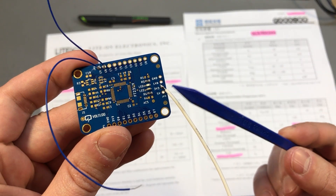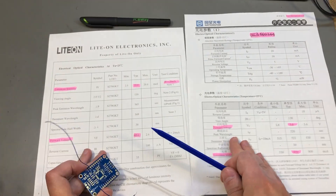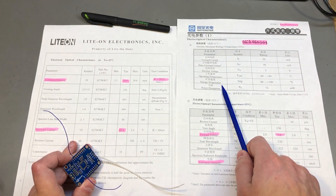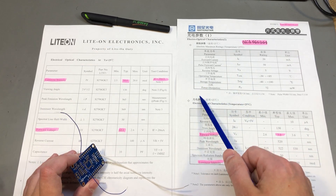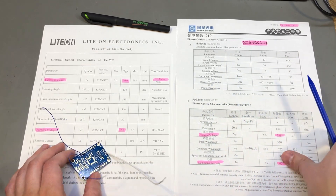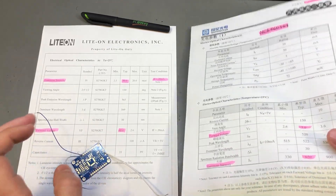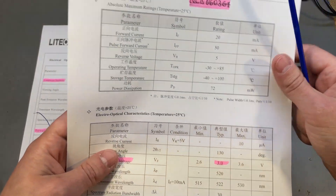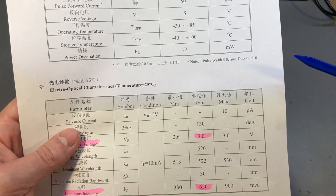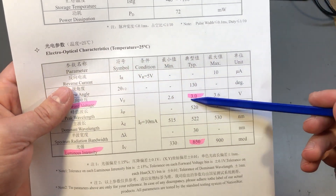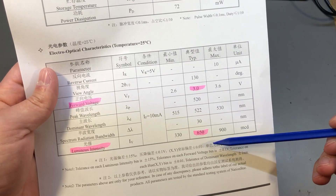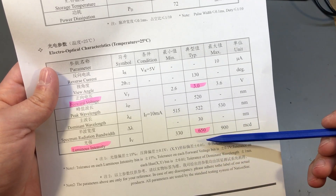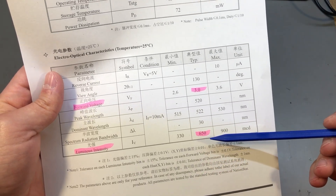Next to it, also on the same board, I have installed another LED — also green, 0603 package — but this one has a forward voltage of 3 volts with a typical luminous intensity of 650 milli candela.